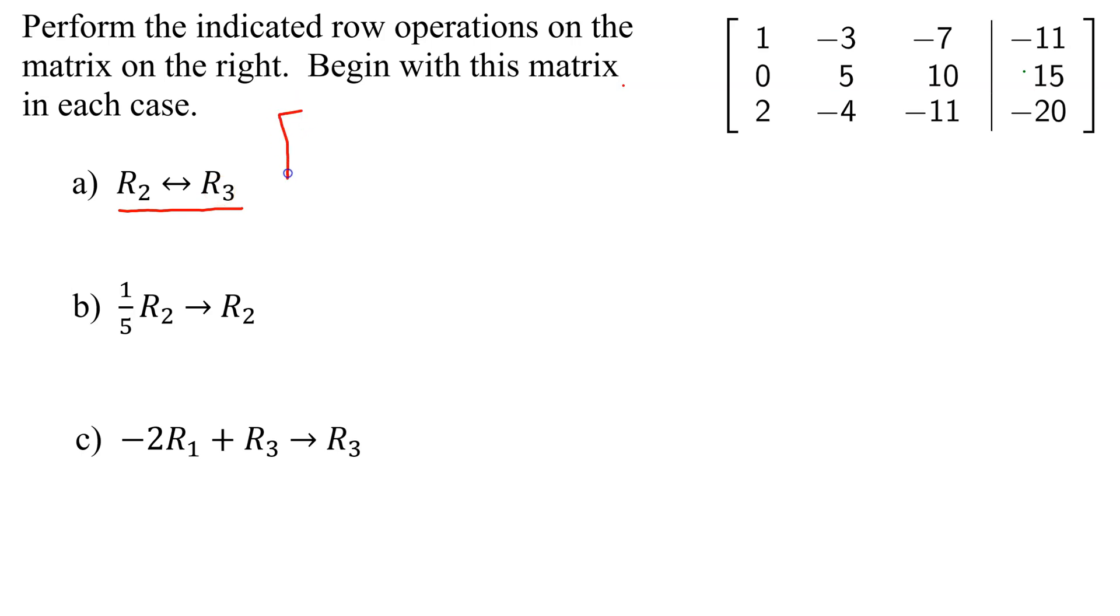The only two rows that are going to change are 2 and 3, so row 1 is going to stay the same at 1, negative 3, negative 7, and negative 11.